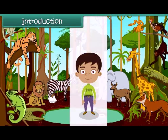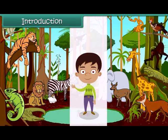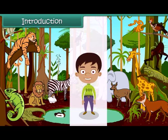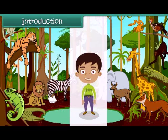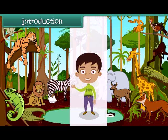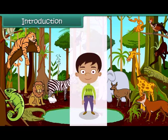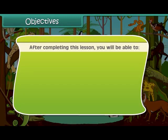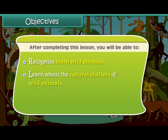Hello kids! This is a jungle. Animals living here are called wild animals. The jungle is the world of wild animals. Wild animals are important and interesting animals found on the earth. Let us know more about these wild animals. After completing this lesson, you will be able to recognize wild animals and learn about their natural shelters.